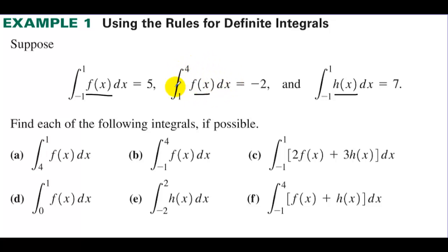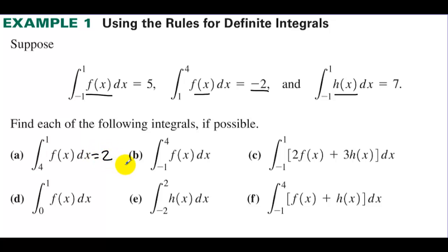Well sure, that's the opposite of this one because the limits have been switched. The first one is negative 2 from 1 to 4, so 4 to 1 must be positive 2. It's opposite.